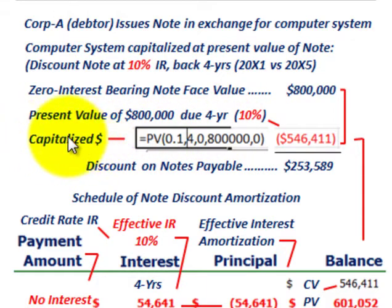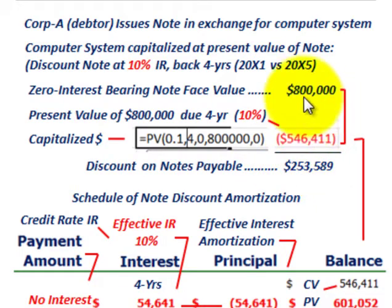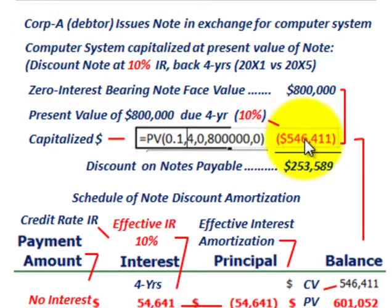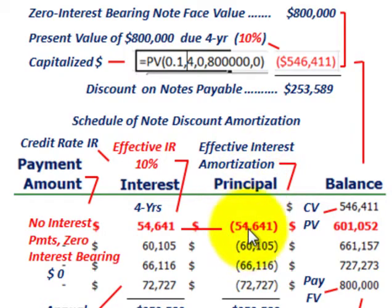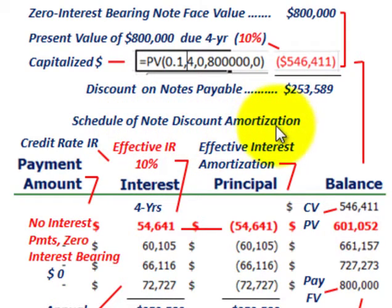That $546,411 is what we assign as the capitalized amount on this computer system. We also need to determine the discount on notes payable, which is simply the difference between the face amount of $800,000 less its present value of $546,411, giving us a discount on notes payable of $253,589. Corporation A must amortize this note, so we set up an amortization schedule — a schedule of note discount amortization.